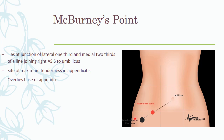McBurney's point is the point which overlies the base of the appendix — it is the surface marking for the base of the appendix. To identify it, draw a line from the anterior superior iliac spine to the umbilicus; at the junction of the lateral one-third and the medial two-thirds of this line is McBurney's point. This point is also the site of maximum tenderness in appendicitis, and whenever we need to do an appendectomy, we use McBurney's point to guide our incision.